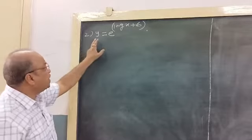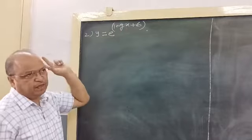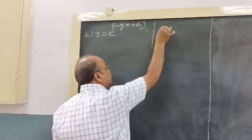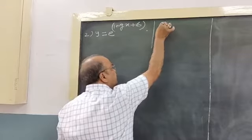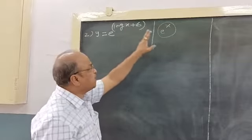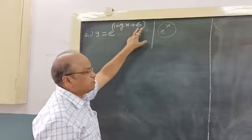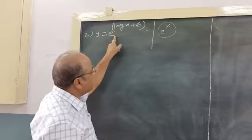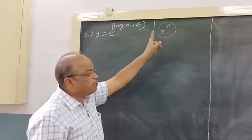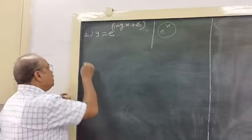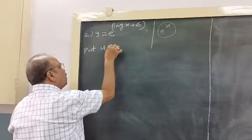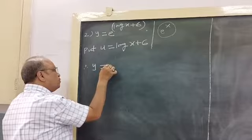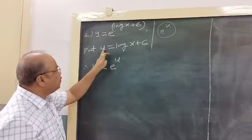See the second example: y is equal to e raised to the power (log x + 6). The whole standard form is e raised to the power of a variable, because we know the derivative of this function. So we reduce this given function into this standard form by putting log x + 6 equal to some another variable u. So y is a function of u, and u is a function of x.